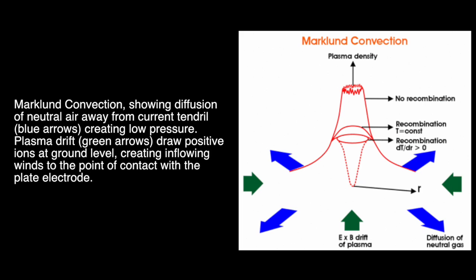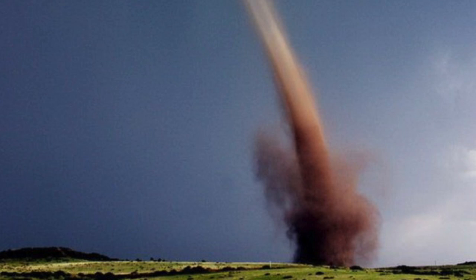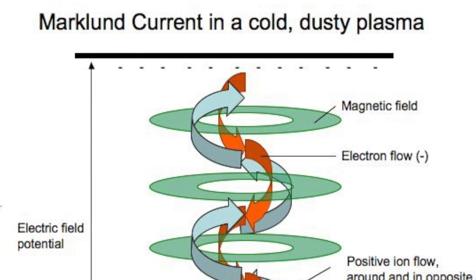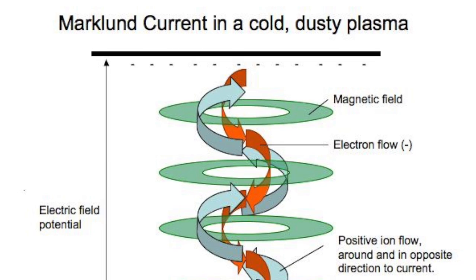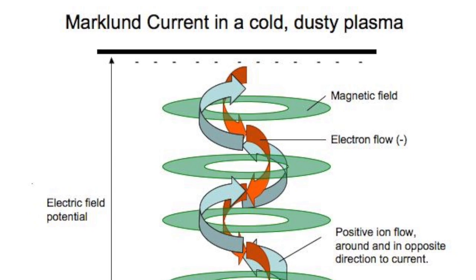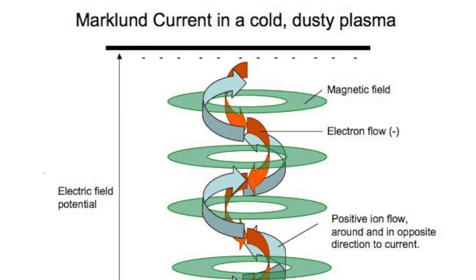Rotation is a natural consequence of the circuit. Neutral air is diffused away from the Markland current, creating low pressure. But positive ions near the ground drag air, dust, and debris to the ground contact, and create inflowing winds and a sudden change in direction up and around the tendril. The meeting of these opposing winds is the ground vortex. The current flow in the plasma will itself rotate, taking a helical path as it interacts with the magnetic field around it. The appearance of a tornado is precisely the expected morphology of a Markland current.